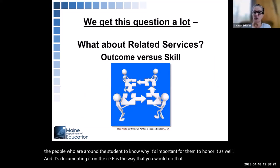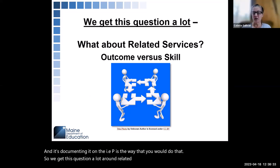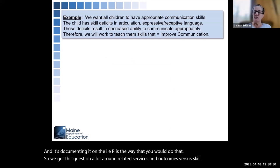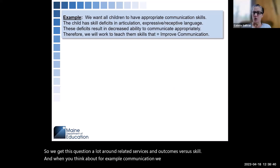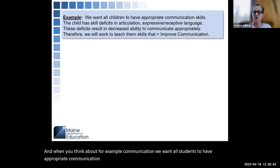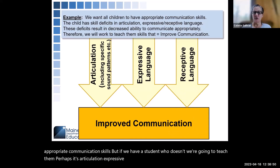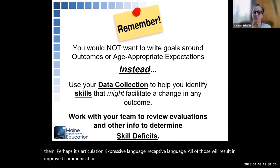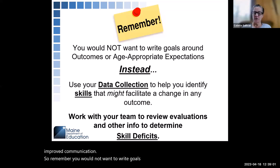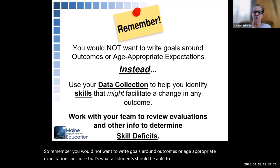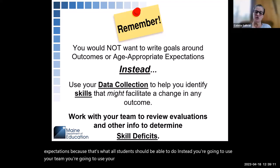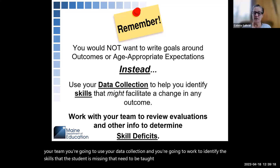We get this question a lot around related services and outcomes versus skill. When you think about communication, for example, we want all students to have appropriate communication skills. But if we have a student who doesn't, we're going to teach them — perhaps it's articulation, expressive language, or receptive language — all of which will result in improved communication. You would not want to write goals around outcomes or age-appropriate expectations, because that's what all students should be able to do. Instead, use your team and your data collection to identify the skills the student is missing that need to be taught to facilitate a change in that identified outcome.